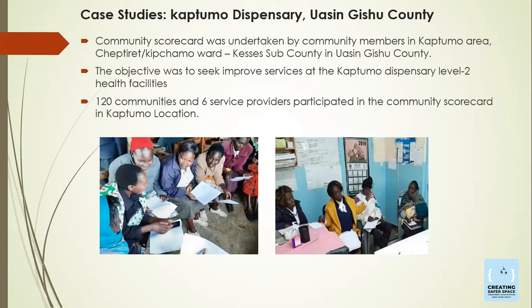We undertook one community scorecard at Kaptumo Dispensary in Uasin Gishu County. The community scorecard was undertaken at Kaptumo Dispensary, a level two health facility. About 120 community members from the Kaptumo location participated, and six service providers within Kaptumo health facility also participated. As you see in the photo, that is the women's focus group discussion assessing services offered at the facility, and on the right-hand side the nurses also have an opportunity to assess the services they provide.